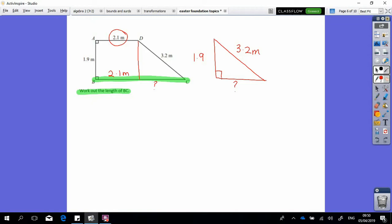So we are working out a shorter side, so I'm going to do the longer side, the hypotenuse squared. I'm going to do the shorter side, so 1.9 squared, and I'm going to take one away from the other because we're working out a shorter side.